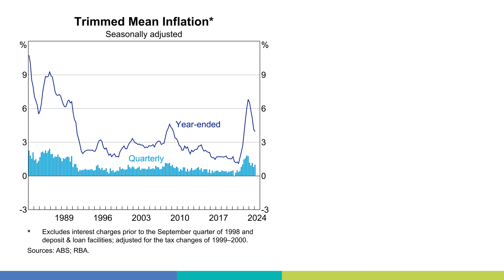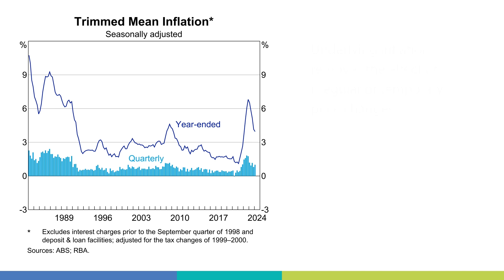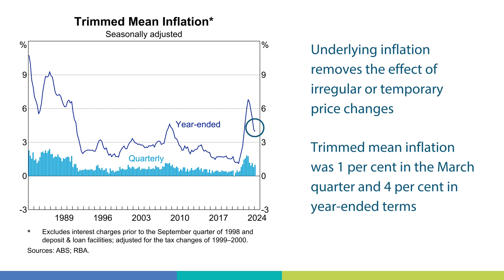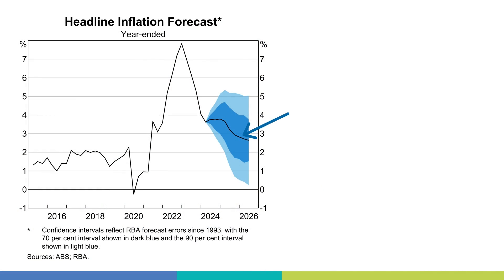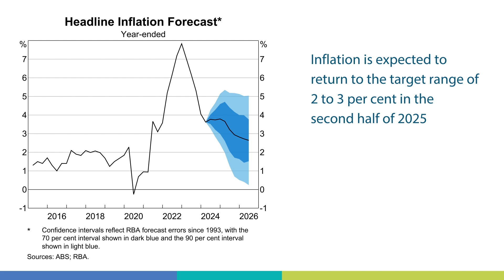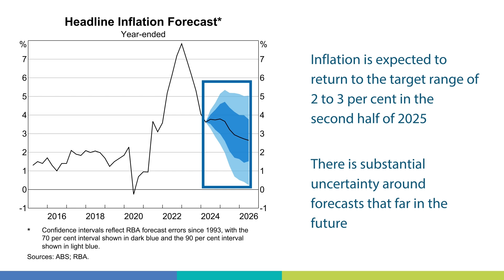Measures of underlying inflation, such as trimmed mean inflation, can better capture the trend in price changes by removing the effect of irregular or one-off price changes. Trimmed mean inflation was 1% in the March quarter and 4% higher over the year. While both trimmed mean and headline inflation have continued to decrease, the pace of decline has slowed in recent quarters. Looking ahead, it will take some time for inflation to return to the bank's target range of 2–3%. The black line shows the RBA's central forecast for headline inflation — it is expected to return to the target range in the second half of 2025 and reach the midpoint in 2026, though there is substantial uncertainty around forecasts that far ahead, shown by the blue uncertainty fans.